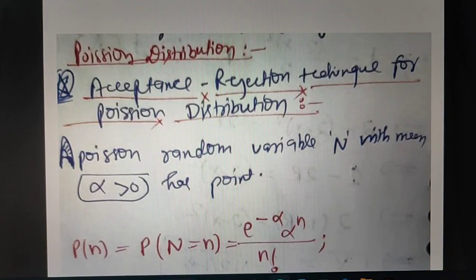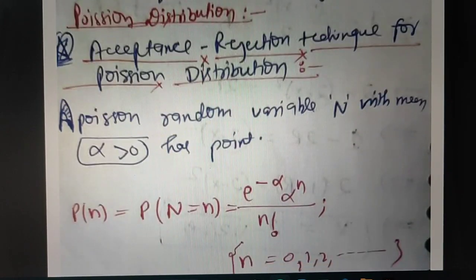So in next video I will discuss by one example that will fulfill the condition of Poisson distribution using acceptance and rejection technique. Thank you.